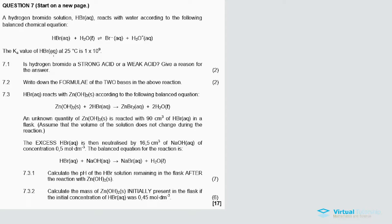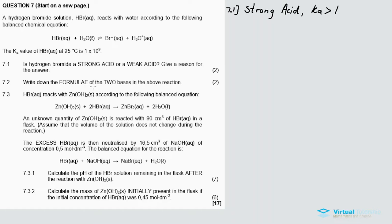The Ka value of hydrogen bromide solution at a given temperature is 1 × 10⁹. The Ka value is bigger than one, which means this acid ionizes completely — that makes it a strong acid. When Ka is less than one it's simply the opposite: a weak acid. So for question 7.1, hydrogen bromide is a strong acid because the Ka value is bigger than one and it ionizes completely.